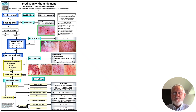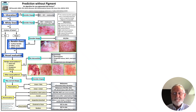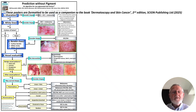A non-pigmented lesion is one with no evident pigmentation by melanin — that's no black, brown, grey or blue colour if these are due to melanin. These posters are formatted to be used as a companion to the book Dermatoscopy and Skin Cancer, second edition, published by Sfion in 2025.